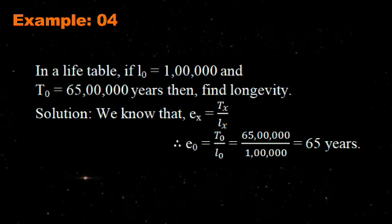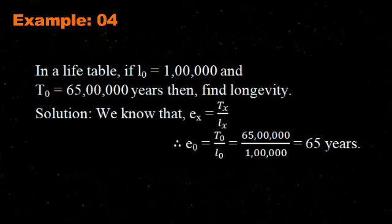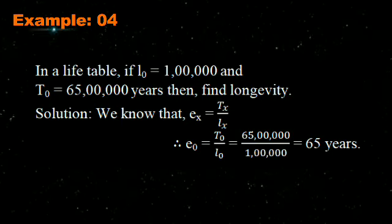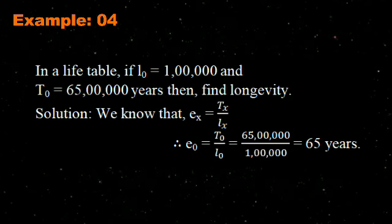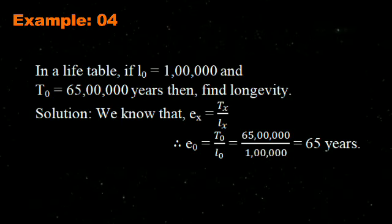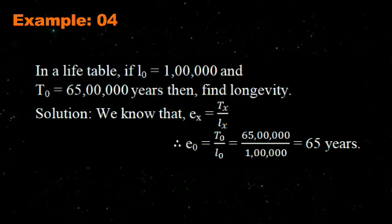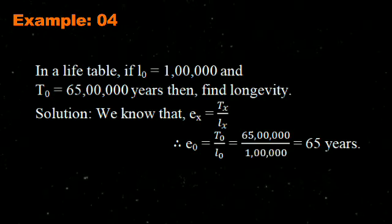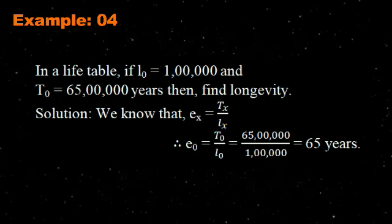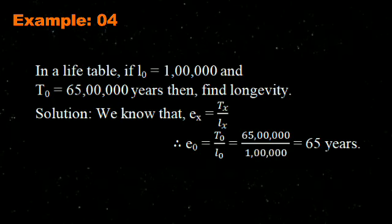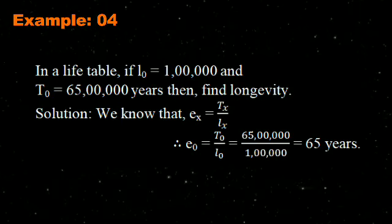Example 4: In a life table, if L0 = 1 lakh and T0 = 65 lakh years, find longevity. Expectation of life is denoted as Ex, so E0 = T0 ÷ L0 = 65 lakh ÷ 1 lakh = 65 years.